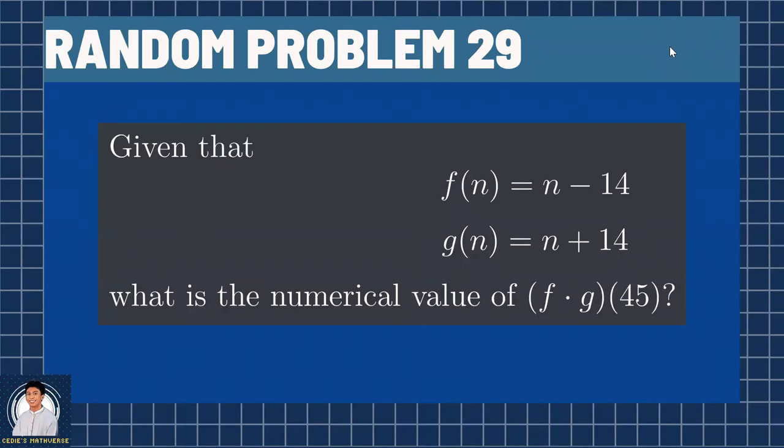All right, so here is our Random Problem 29. Given that f of n equals n minus 14 and g of n equals n plus 14, what is the numerical value of f times g of 45?